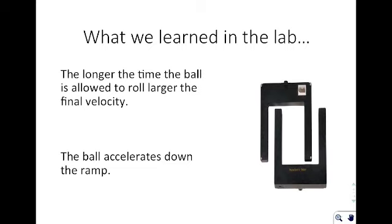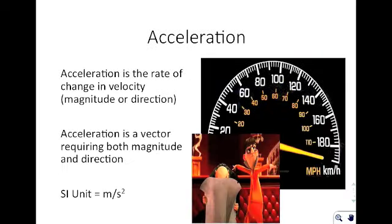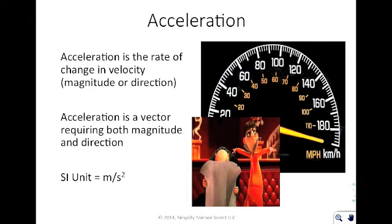From the lab, we learned that the longer the time the ball was allowed to roll along the floor, the larger the final velocity. If a ball rolls down a ramp for a longer period of time, the faster it will be going. We also know that the ball accelerates down the ramp — it gets faster and faster as it moves down.